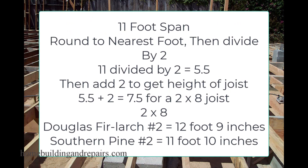Next up, let's look at an 11-foot span, where we end up with 7.5, providing us with a 2 by 8 joist. And we can see where this works out just fine with our lumber chart spans.